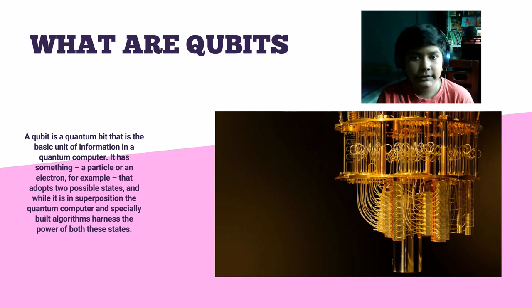It has something, a particle or an electron for example, that adopts two possible states. And while it is in superposition, the quantum computer and especially built algorithms harness the power of these both states.